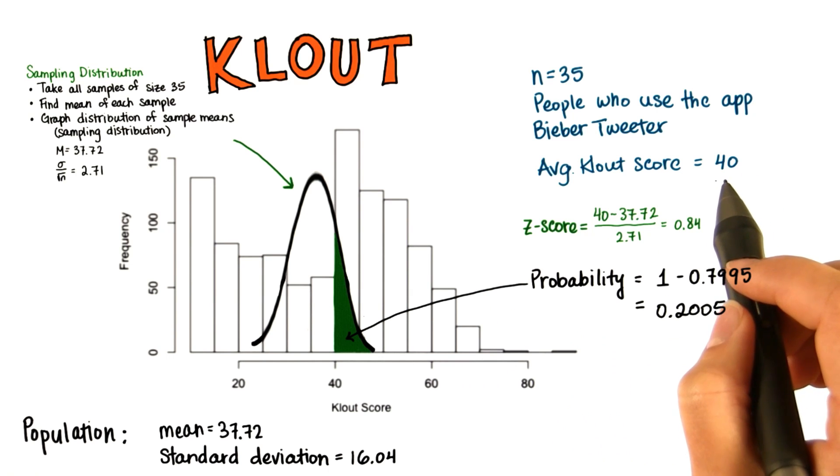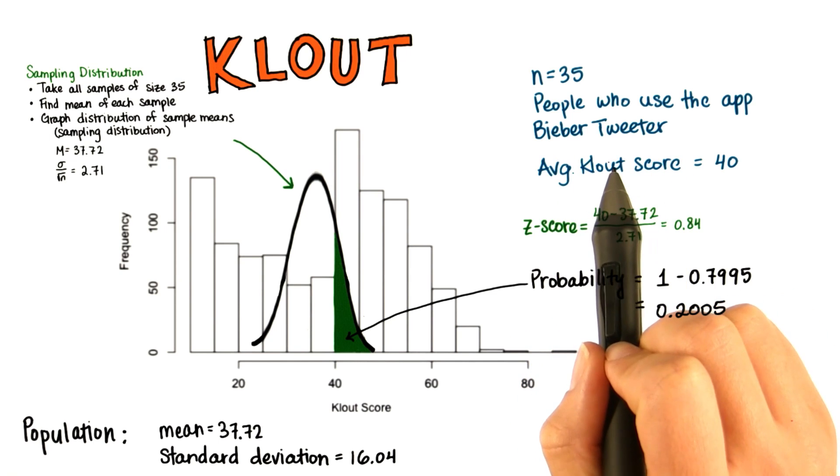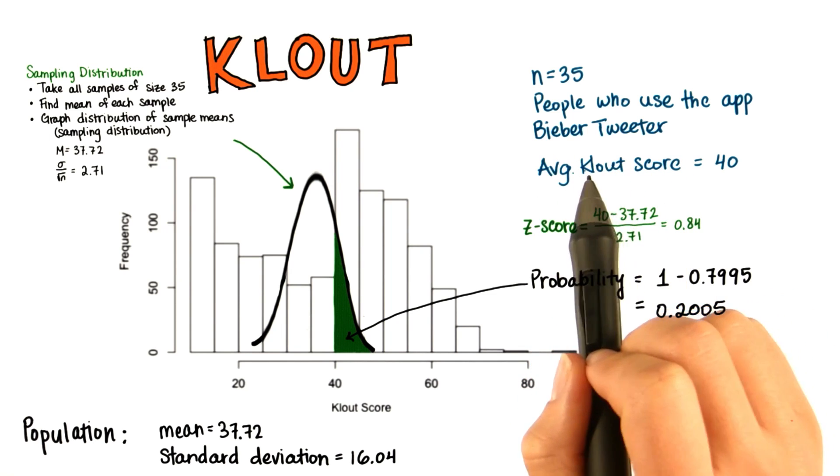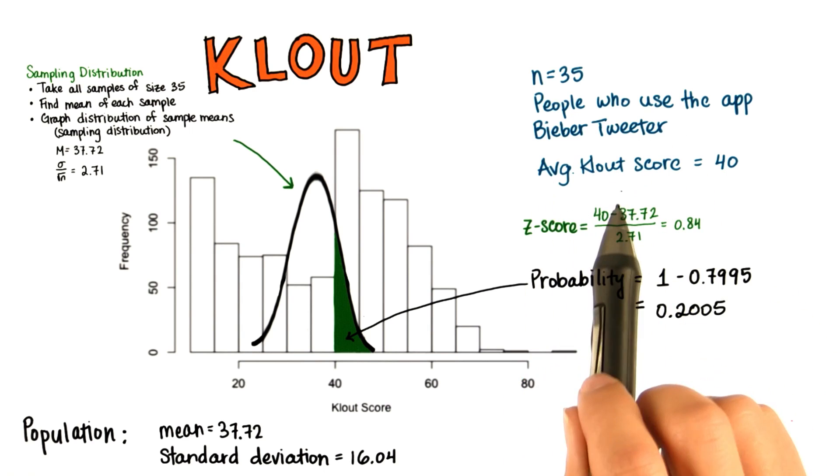If this mean wasn't selected by chance, then it's possible that this app, the Bieber Tweeter, which automatically retweets Justin Bieber, could have played a role in increasing these people's clout scores.